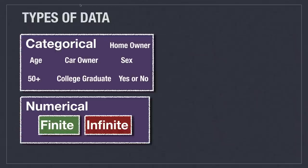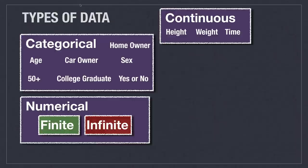Numerical data is either going to be finite, meaning that it has an ending value, or infinite, meaning the opposite — it has no ending value. Continuous data is data that can be broken down into infinitely smaller amounts, so you can think of things like distance, and height, and weight. You can constantly break them down into smaller and smaller units.